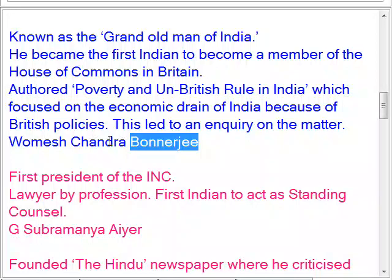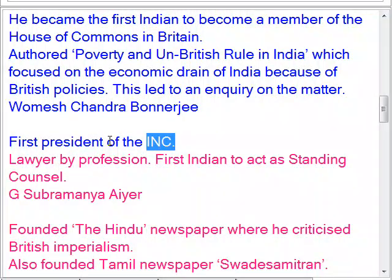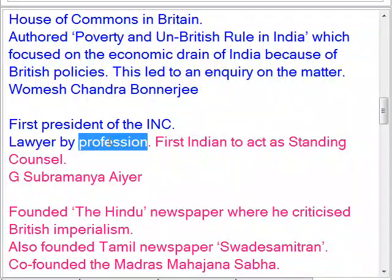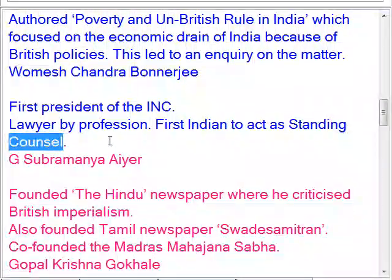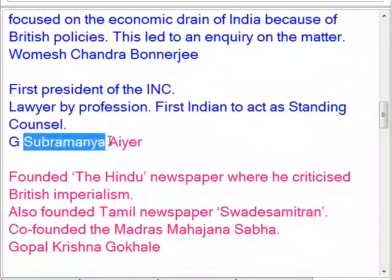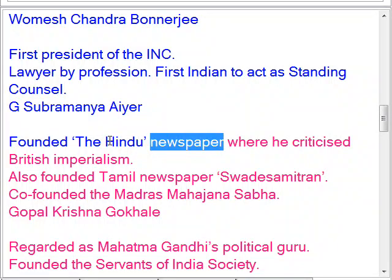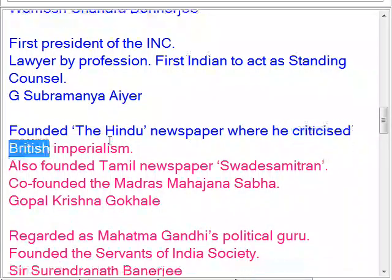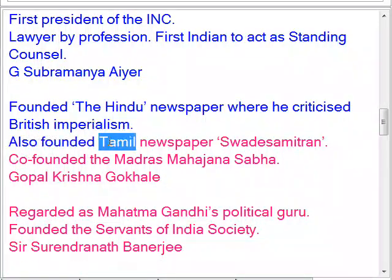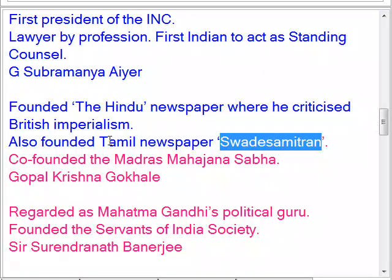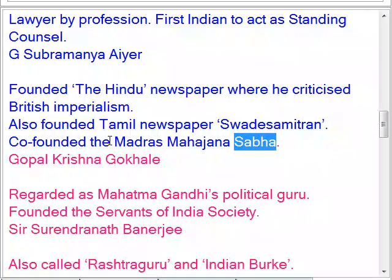Womesh Chandra Banerjee was the first president of the Congress and a lawyer by profession, and the first Indian to act as standing counsel. G. Subramania Iyer founded the Hindu newspaper where he criticized British imperialism. He also founded the Tamil newspaper Swadesamitran and co-founded the Madras Mahajana Sabha.